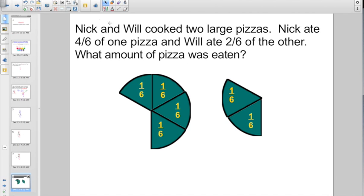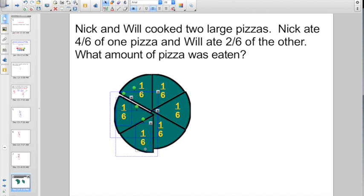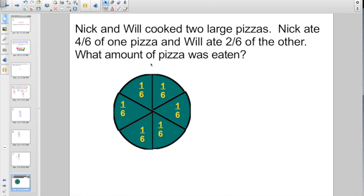Check out this guy here. Nick and Will cook two large pizzas. Nick ate four-sixths of one pizza and Will ate two-sixths of the other. What amount of pizza was eaten? Well, you had four-sixths and two-sixths more. We could go ahead and add them all up. What do I got there? That sounds to me like I have six-sixths. But you really want to say, oh, they ate six-sixths of a pizza. No way. They really ate one whole pizza because the numerator and the denominator are the same. So it equals one whole.